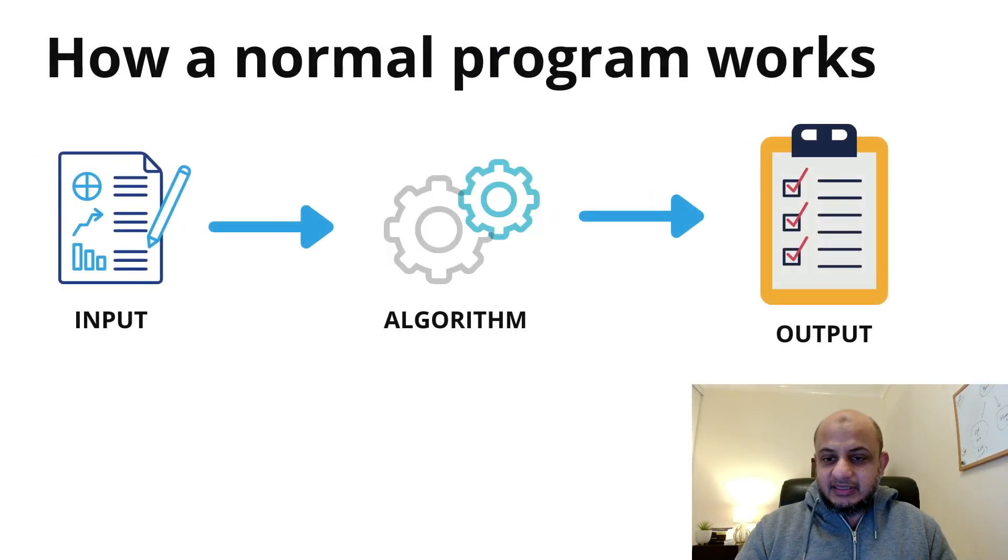If you want to understand at a very high level, this is how a normal program works, a normal application. You have an application, you give it an input. There is an algorithm there and it gives you an output. This remains the same for the last 40 years. Whether it's a web application, desktop application, mobile app, or microservices architecture, it's taking some input, doing something with it and giving you an output.